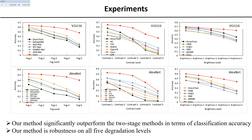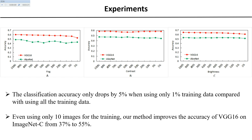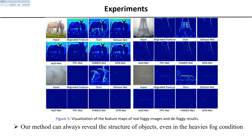We can see that our method significantly outperforms the two-stage methods. Next, we use different proportions of data to train our module. As can be seen, the performance of our feature de-drifting module is not sensitive to data volume — the accuracy only drops by 5% when using only 1% of the training data compared with using all training data. Even using only 10 images for training, our method can still improve the accuracy of VGG from 37% to 55%. We also visualize the feature maps of real fog images generated by different methods. Compared with two-stage methods, our method can always reveal the structure of objects, even in the highest fog condition.